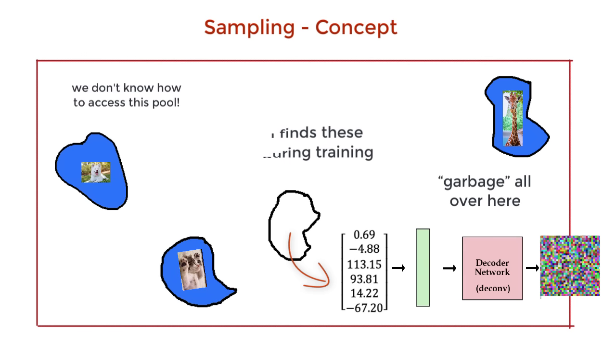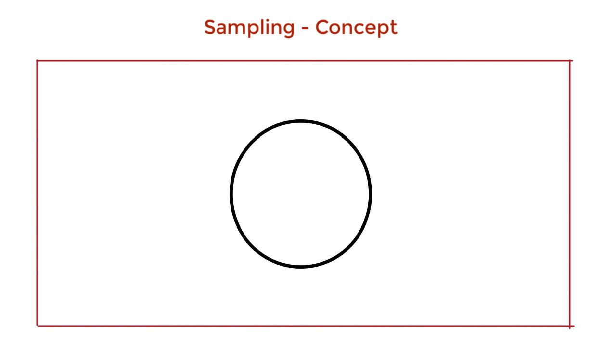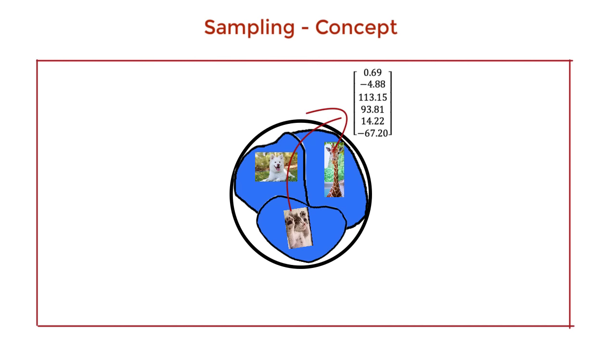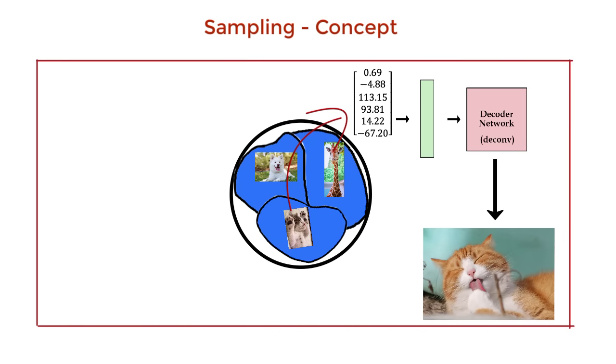But what if we did know where to pick these vectors from? Then that would solve our problem, right? Variational autoencoders does just that. We first define a region we want to constrain this universe, that is, constrain the region from which we want to pick the vectors. And within this region, the goal of the variational autoencoder is to find the pools. The dog pool, the cat pool, and the giraffe pool. And this is done during the training phase. During the testing phase, all we need to do now to generate an image is randomly sample a vector from this known region, and then pass this vector to the generator part of our variational autoencoder.